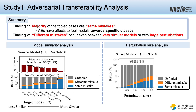Let's look at the analysis results. The first observation is that the majority of the fooled cases are same mistakes, regardless of the similarity between source and target models. In other words, AEs have strong effects to fool towards specific classes, rather than just making models misclassify to any wrong class.